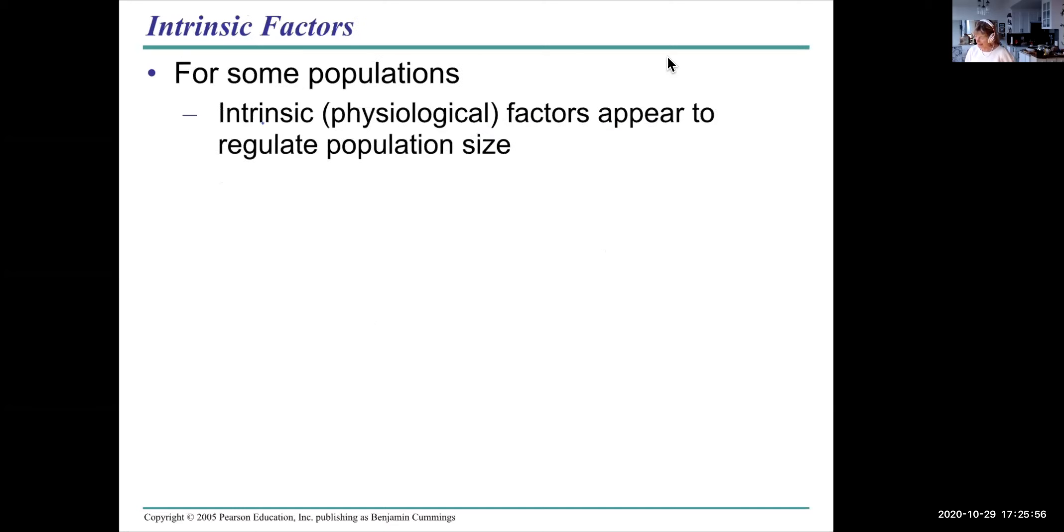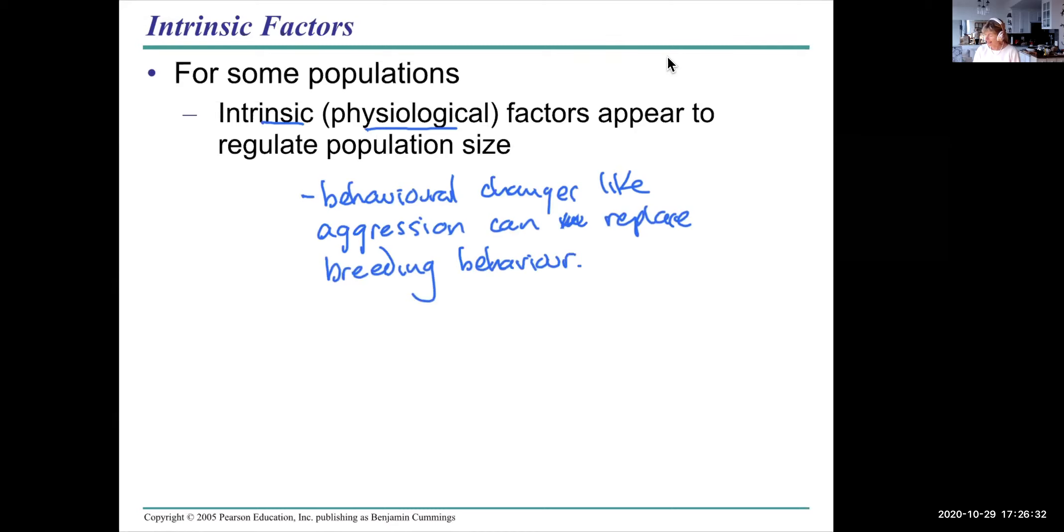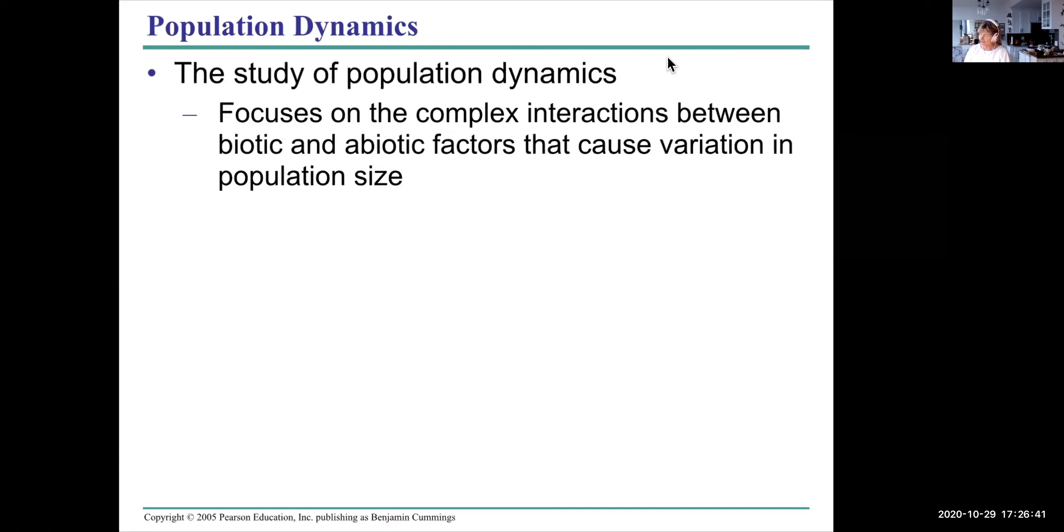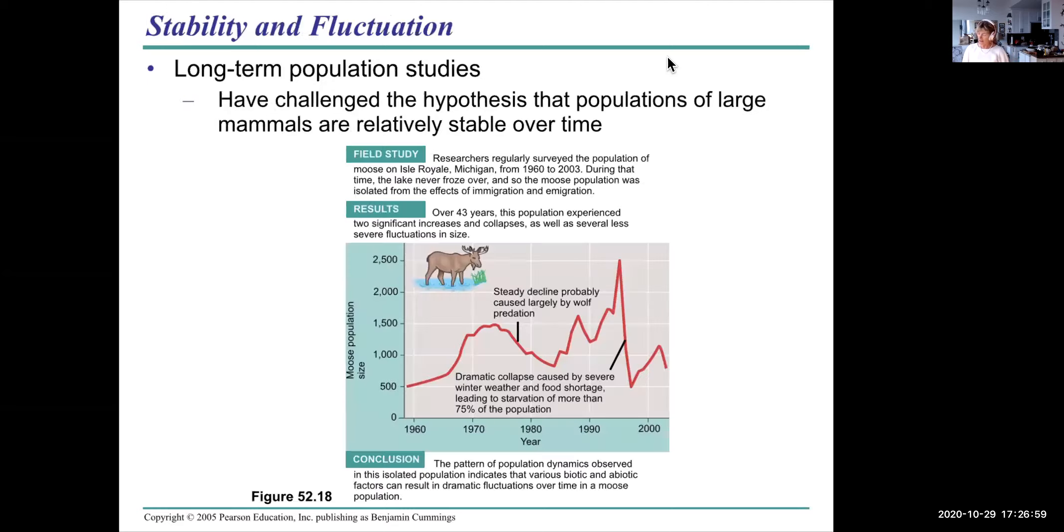For some populations intrinsic or physiological factors appear to regulate population size. For example, behavioral changes like aggression can replace breeding behavior. High densities will contribute to higher death rates or a lower breeding rate. The study of population dynamics focuses on interactions between biotic and abiotic variables. Things like aggressive behavior, territoriality, which is also a kind of behavior, abiotic variables like nutrients and water available, space available. They cause a variation of population size. Some populations may be stable over time. Some may fluctuate over time.